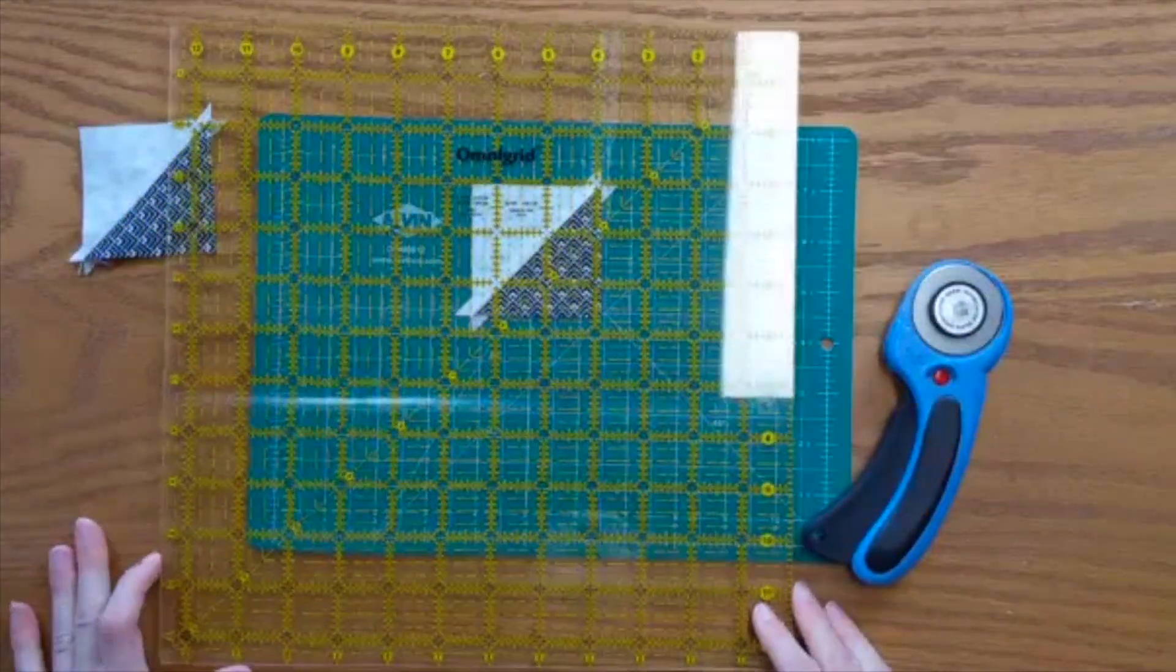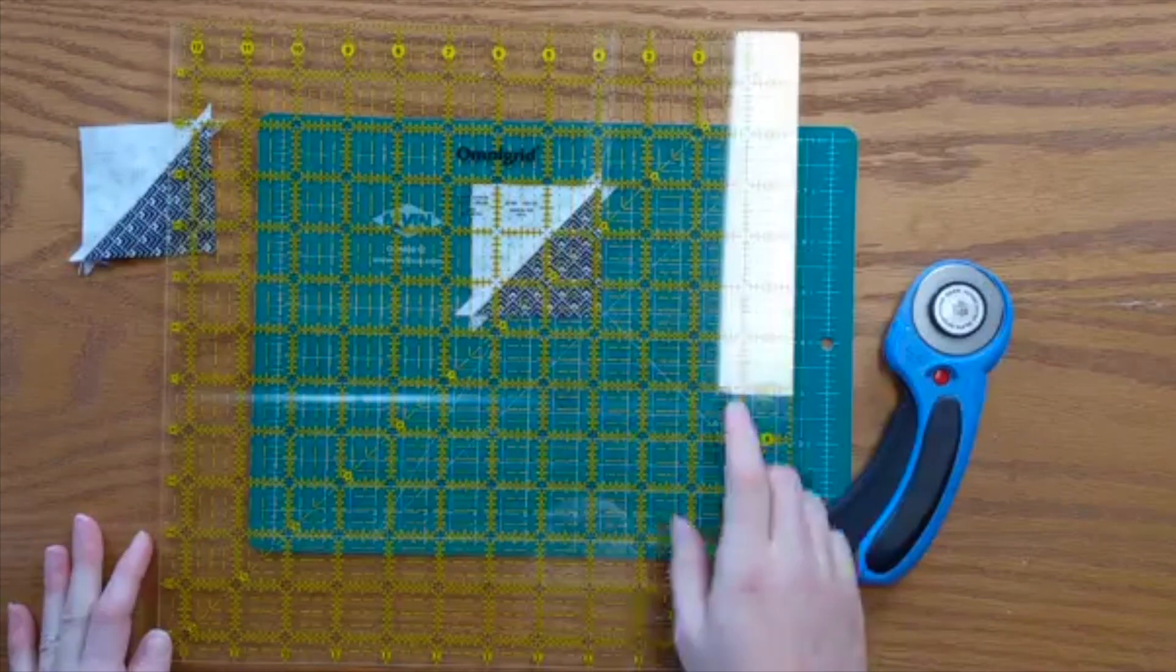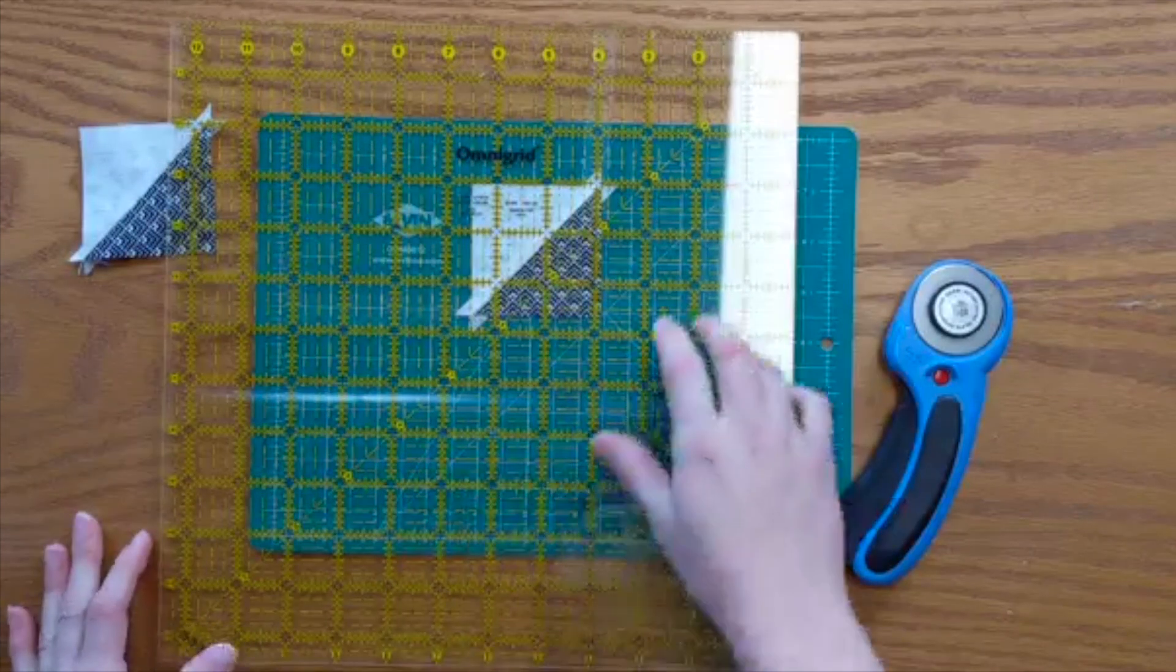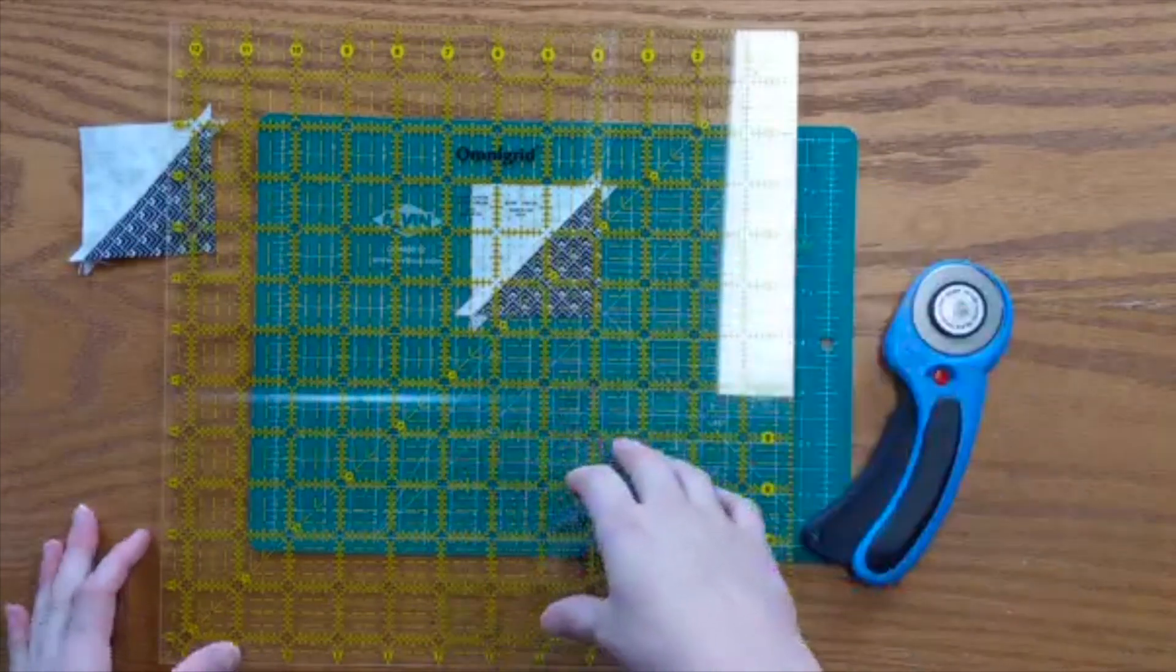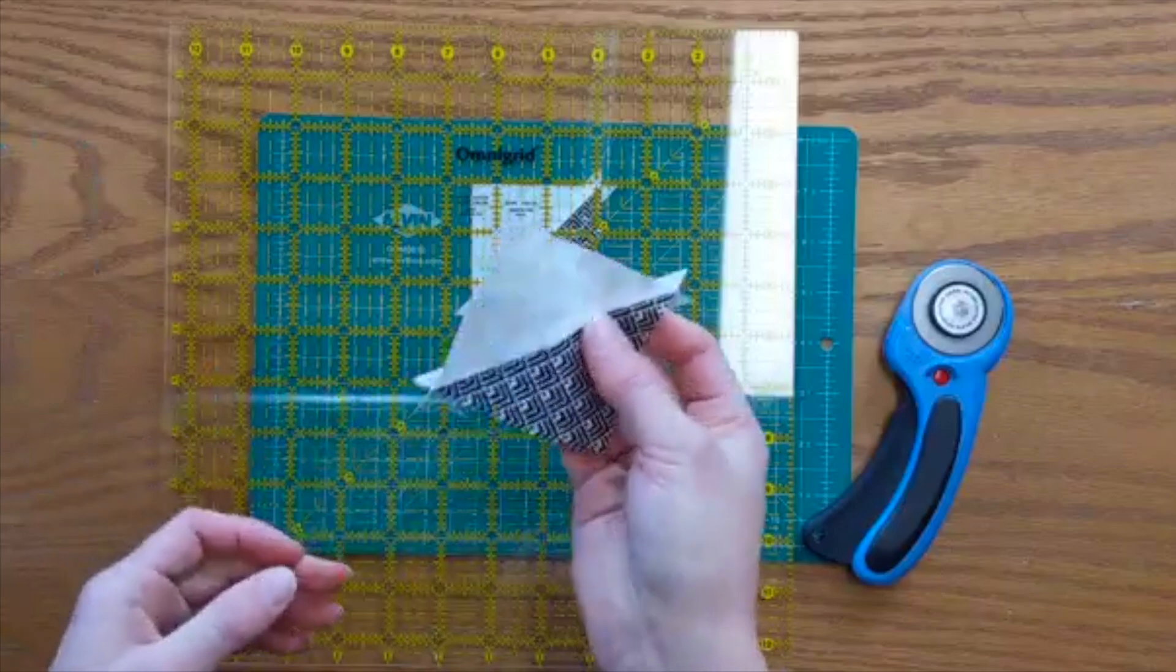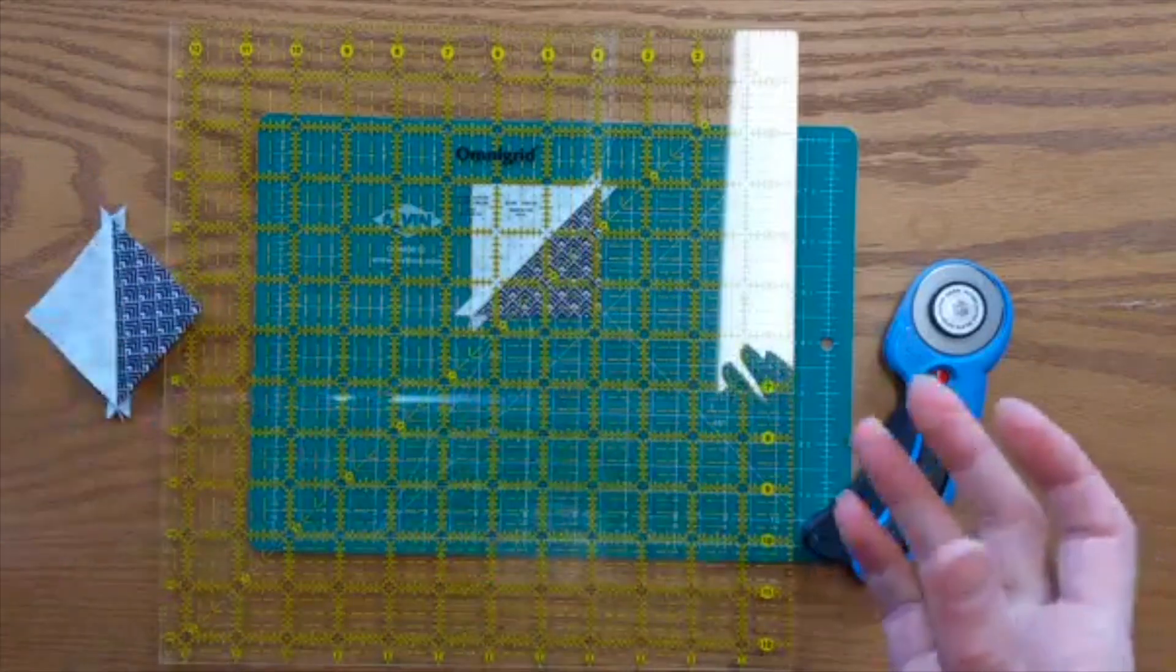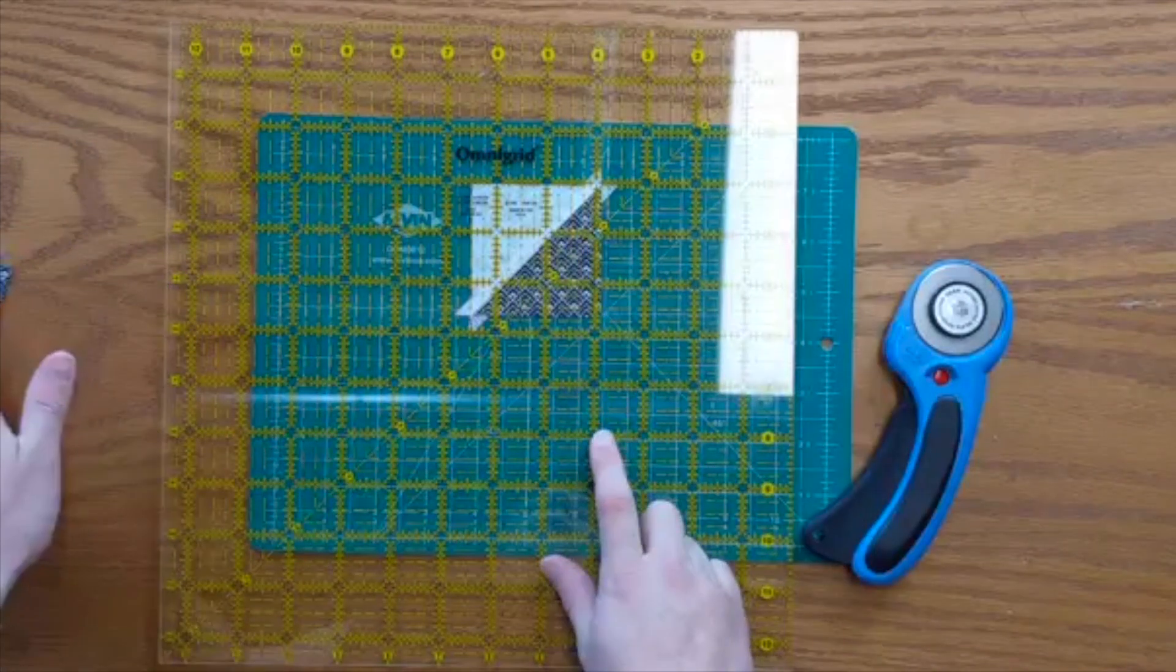If you don't have a square ruler and you're going to get just one, start with a 12.5 inch. It's a really good size to be able to cut a lot of things with. The 9.5 inch is great or even smaller for these little pieces, but when you have larger cuts of fabric you need to do, this is a really good overall size.